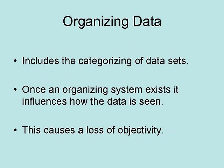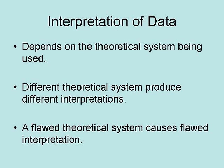The organizing of data includes the categorizing of data sets, and once an organizing system exists, it influences how data is seen. This causes a loss of objectivity.